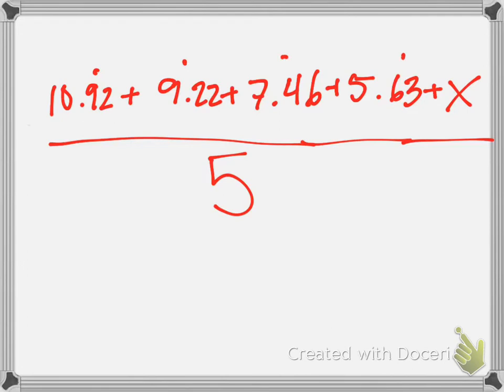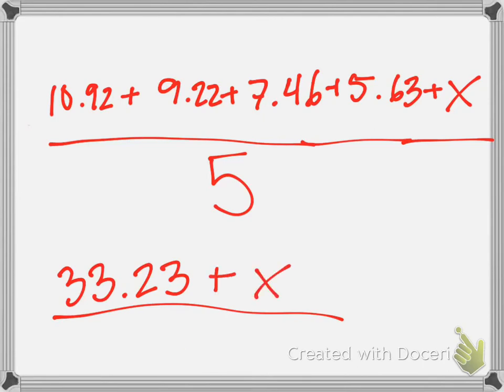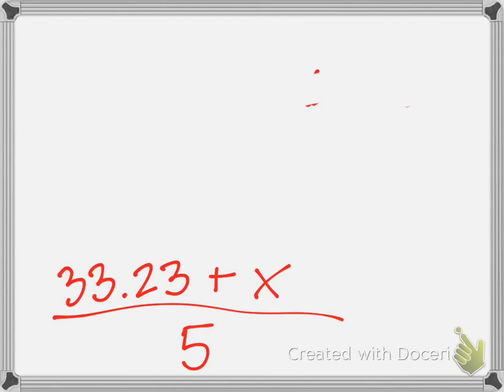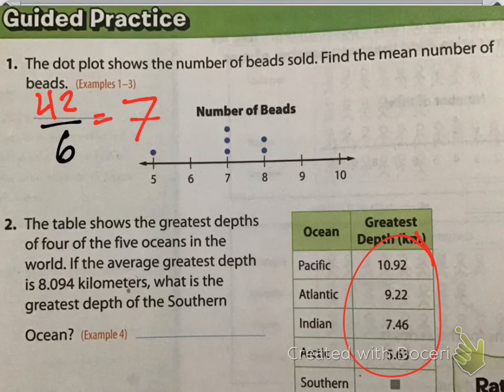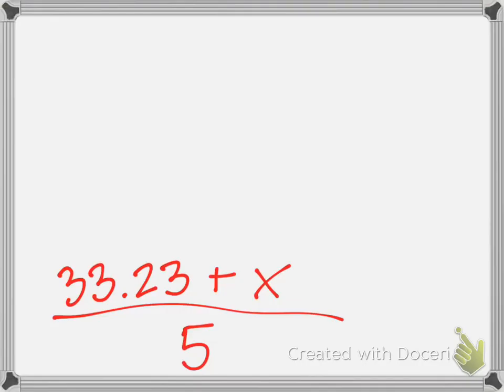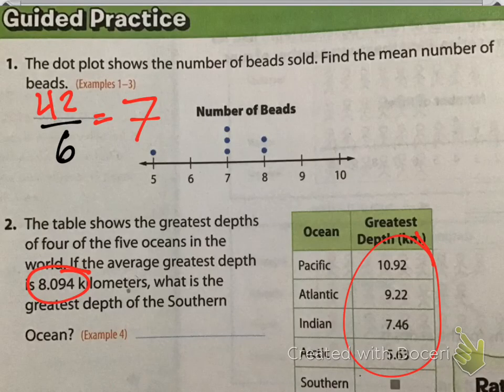Now, we only know the answer to 4 of them. So, we're going to plug those in to what we know. For the Pacific Ocean, we know that it is 10.92. For the Atlantic Ocean, it is 9.22. For the Indian Ocean, I'm just going to write this whole thing out. Pacific, Atlantic, Indian, Arctic, and this is our Southern, our unknown. We don't know what it is yet. So, I want to add all of these values together now. I'm going to use my calculator, and when I add all of my values together, I get 33.23. It's not my end answer, though, because I still have that unknown that I'm trying to solve.